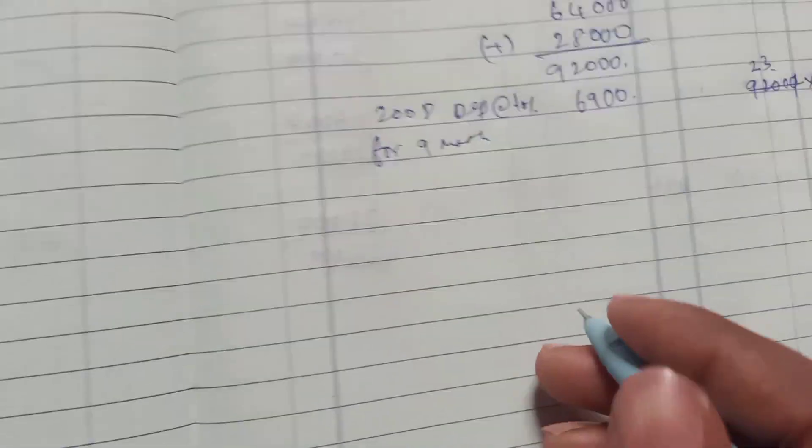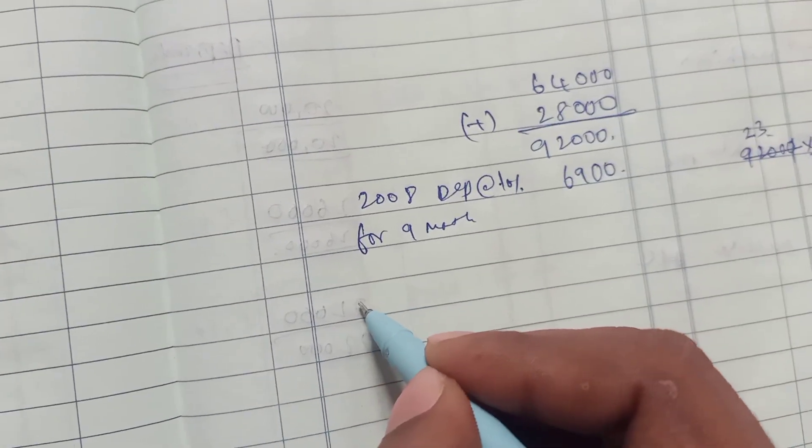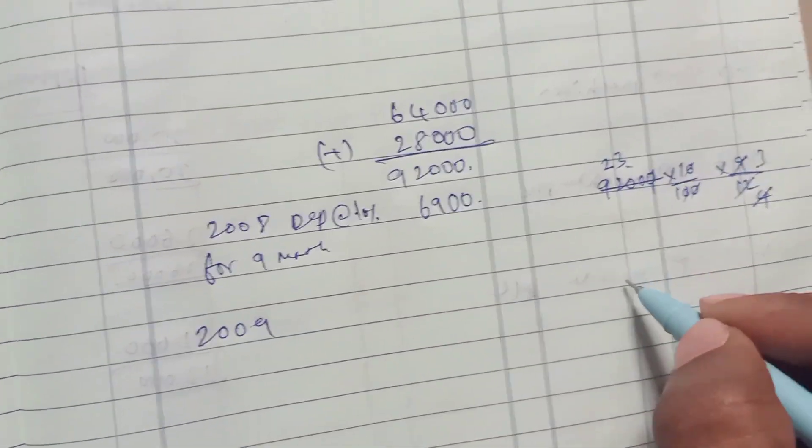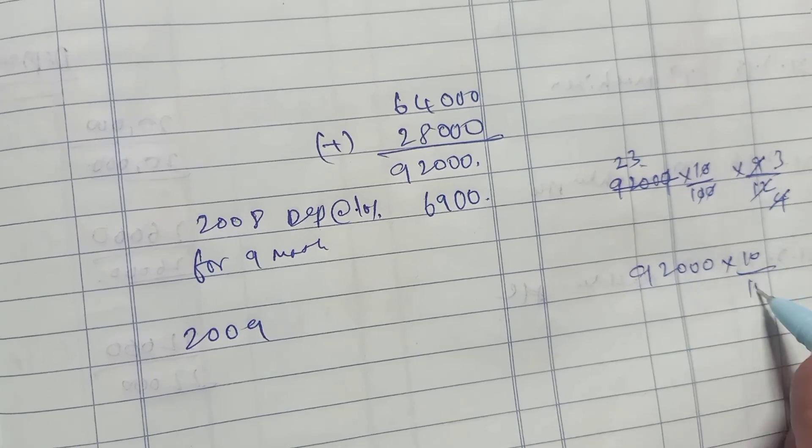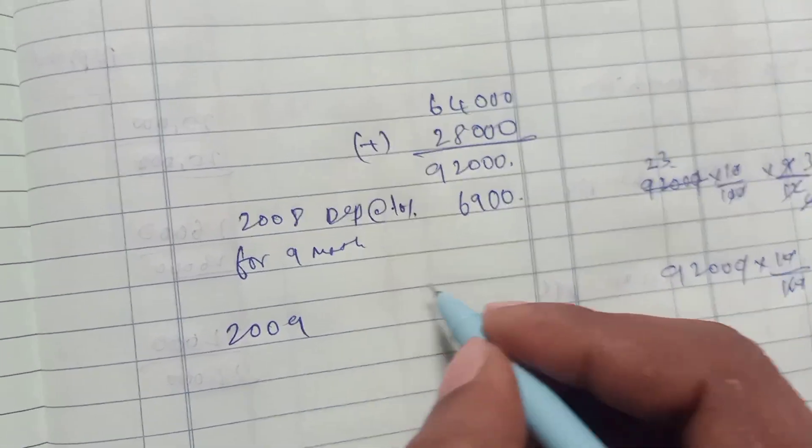Current year depreciation for the full year. Total cost is $92,000 into 10 percentage, that is $9,200.